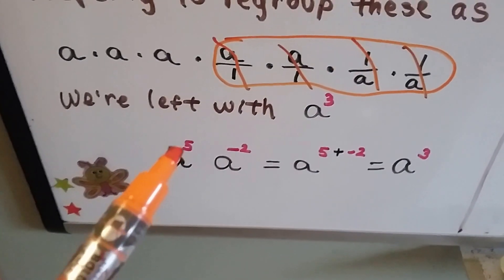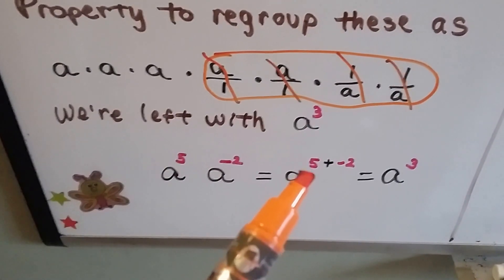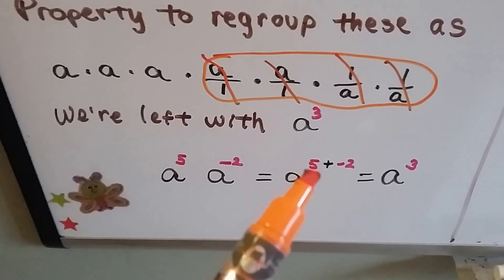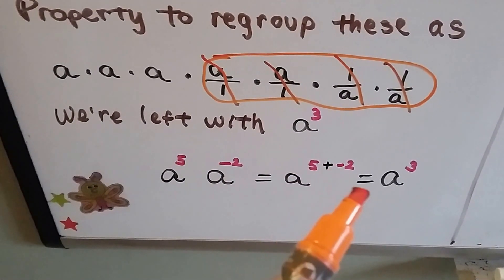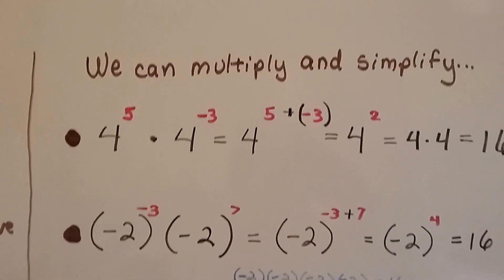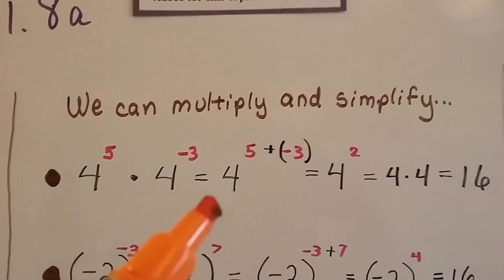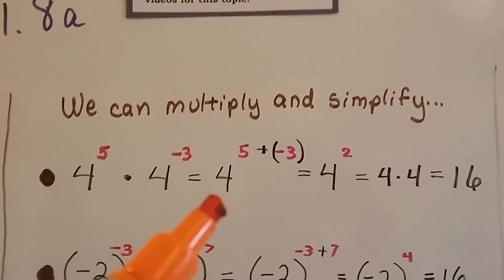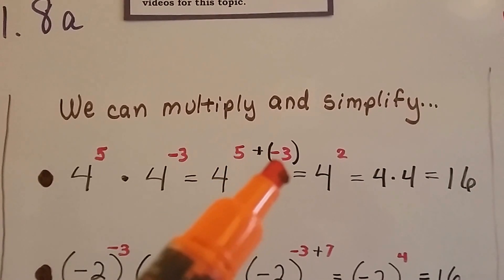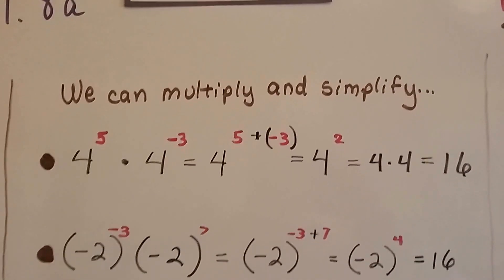So a to the fifth power times a to the negative second equals a to the five plus negative two, which gives us a positive three — a to the third. Similarly, four to the fifth power times four to the negative third equals four to the fifth plus negative three, which is four to the second — four times four — that's 16.